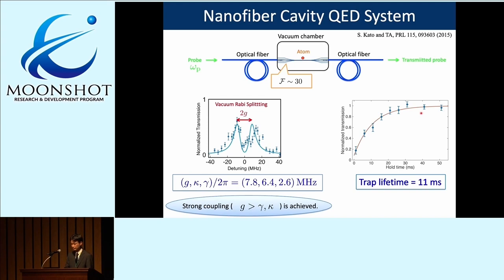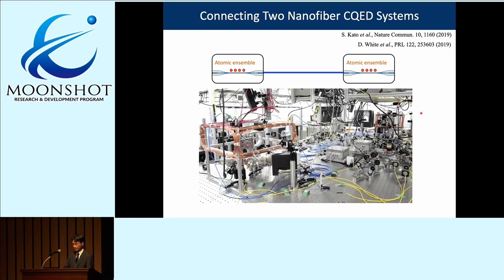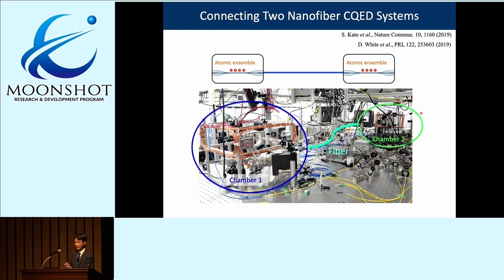In succeeding experiments, we constructed another chamber and cavity, giving us two nanofiber cavity QED systems, each containing an ensemble of atoms, connected together simply by splicing a piece of fiber. This is shown on the optical table: here is the first chamber, here the second chamber, connected with a single piece of fiber. The loss of this connection channel is dominated by only the splicing loss of about one percent, making the connection extremely low-loss.